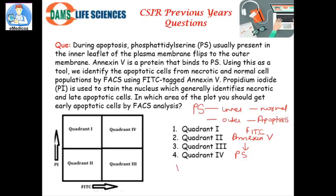You also have propidium iodide (PI) which is used to stain the nucleus. The question asks: in which area of the plot should you find early apoptotic cells by FACS analysis?